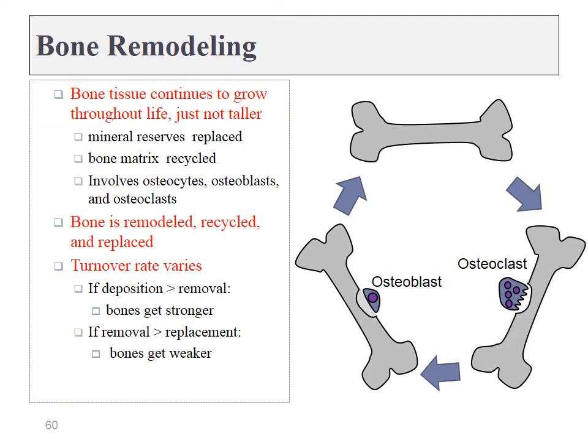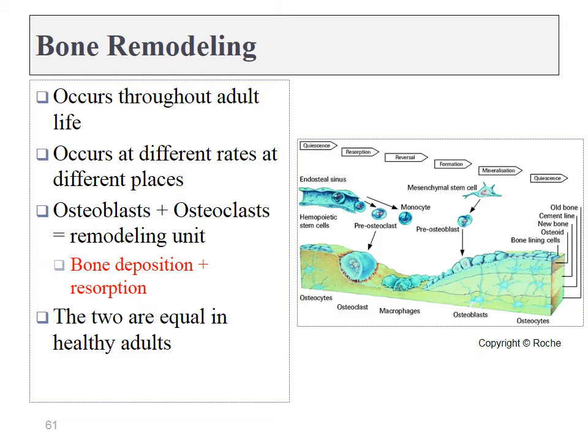Next up, we need to cover bone remodeling. As bones go throughout life, they change — this is definitely a living tissue. Bone tissue is removed and then replaced, and there is a turnover rate between these two. If deposition is higher than removal, bones will grow stronger. On the other hand, if the removal is faster, bones will grow weaker, and this can lead to a condition called osteoporosis.